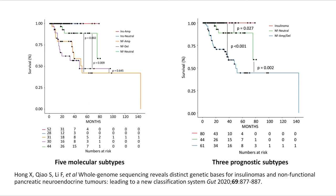We then integrated the 5 molecular subtypes into 3 prognostic subtypes. Insulinoma amplification and neutral were combined as insulinoma, and NF amplification and NF deletion were combined as NF-ANF-DAL. The prognosis of NF neutral was significantly worse than that of insulinoma, but better than NF-ANF-DAL.